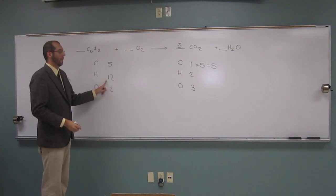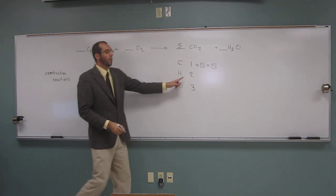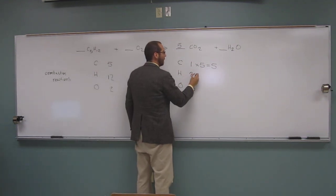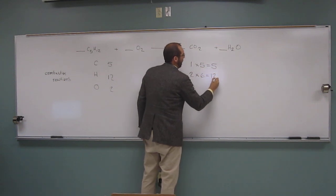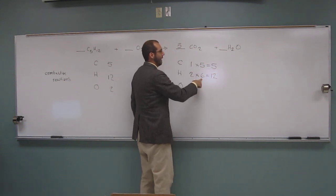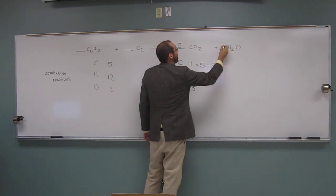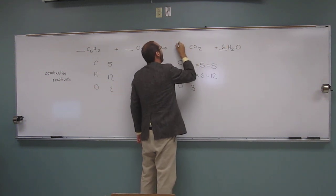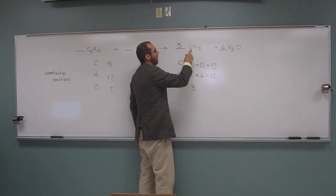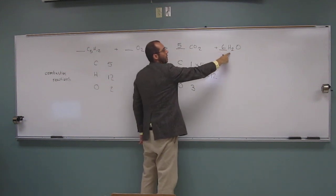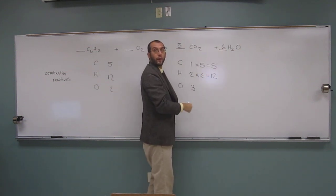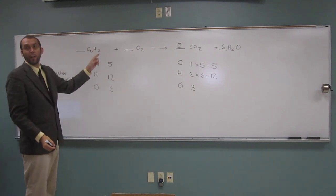What about 12? 1 times what equals 12? 6. Okay. So we're going to put a 6 over there. Why did we do that? Because now we have 5 C's and 2 times 6 equals 12 H's. And we have the same over here.